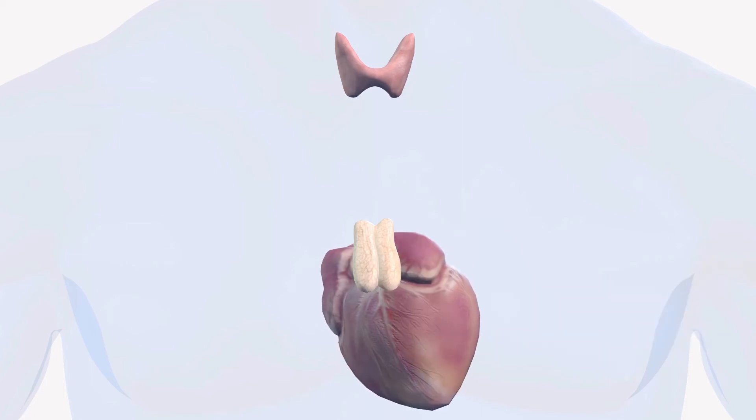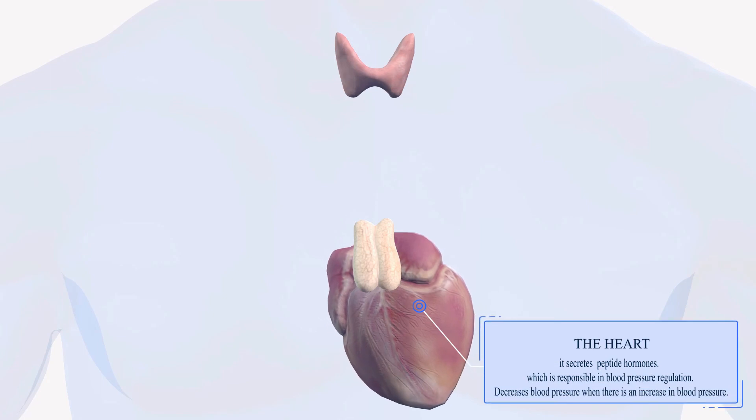Of course in this person we have the lungs connected to trachea and the heart between the levels. Now if you didn't know the heart is also classified as an endocrine gland, because it secretes natriuretic peptide which is responsible for blood pressure regulation. It actually decreases blood pressure when there is an increase in blood pressure.